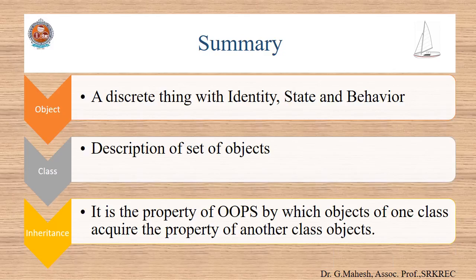Here is the summary of the PPT including main points to be remembered. Object is a discrete thing with identity, state and behavior. Class is a description of set of objects. Inheritance is the property of OOPs by which objects of one class acquire properties of another class objects.